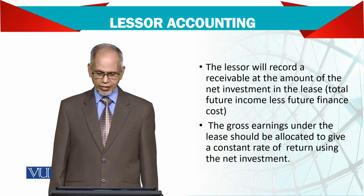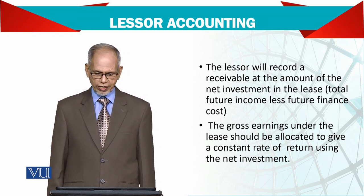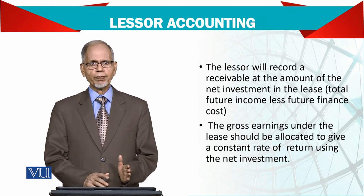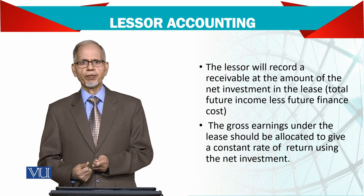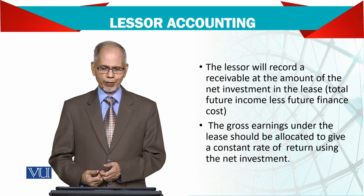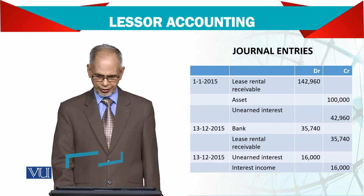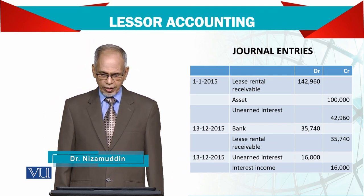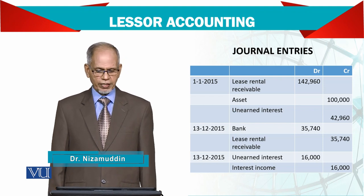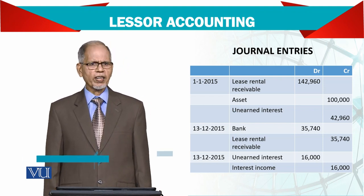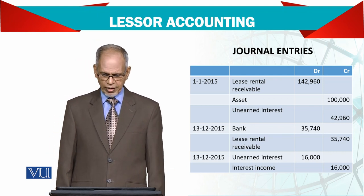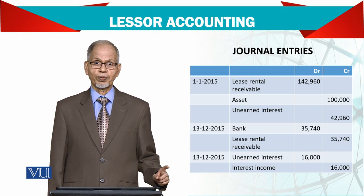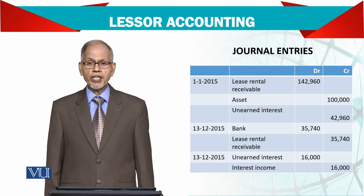The gross earning under the lease should be allocated to give a constant rate of return using the net investments. Looking at the journal entries in the lessor's book: lease rental receivable debit, or simple account receivable debit, and credit the assets account for the 100,000 asset. And unearned interest is also recorded.